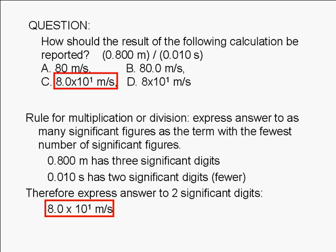8 and 0. 80 meters per second has only 1 significant digit, 8.